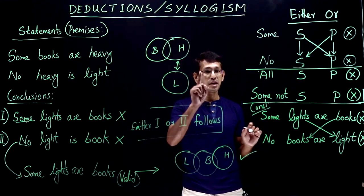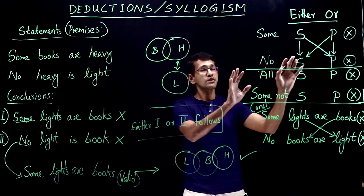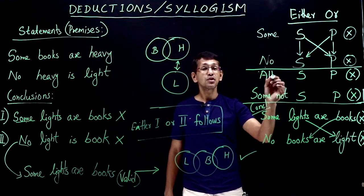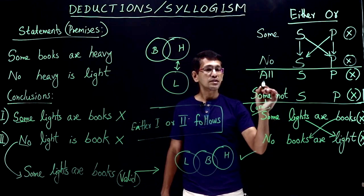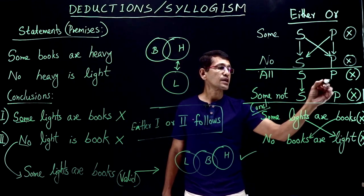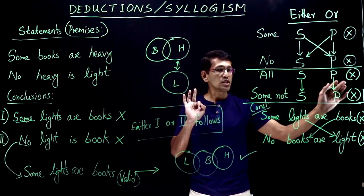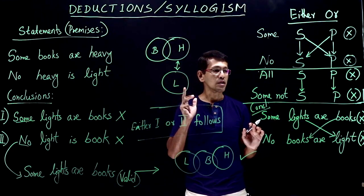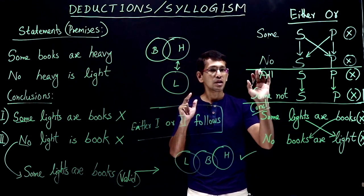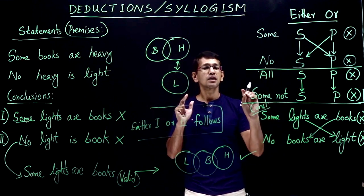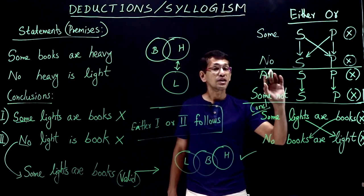So now we have two conclusions, both do not follow, one is all and the other one is some-not. If all and some-not — be careful. Like with some-not, we checked it out and got either-or. Now it's all and some-not, another pair. Both do not follow, all and some-not, subject is subject and predicate is predicate — three conditions. If that is the case, this would be another either-or pair.